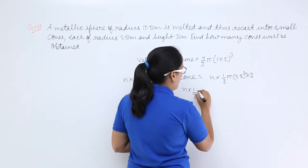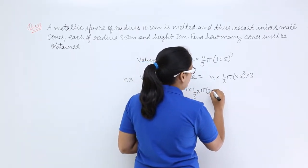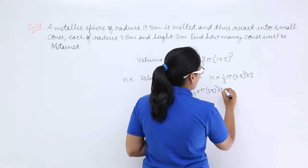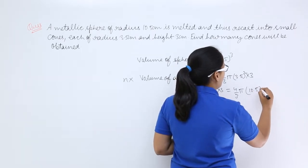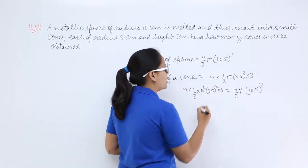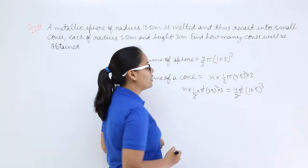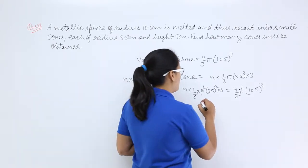n into 1/3 π (3.5)² here. This is 4/3 π (10.5)³. π and π will get cancelled out. 3 and 3 will get cancelled out.